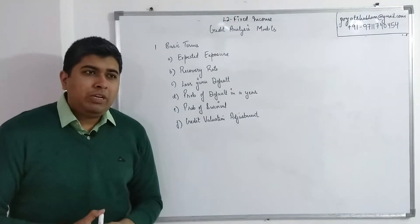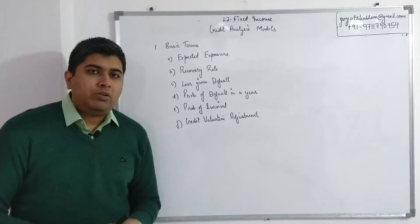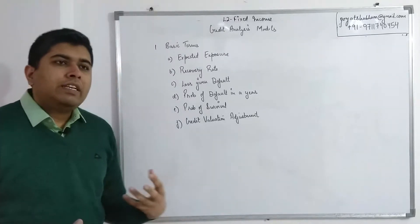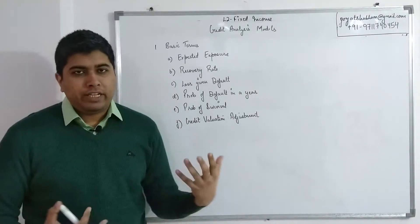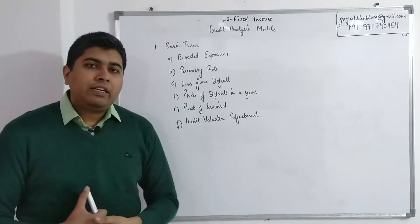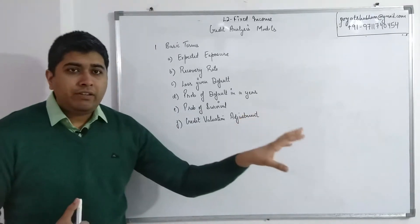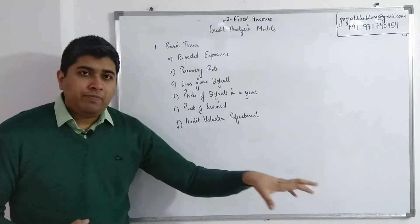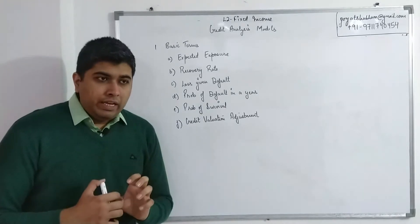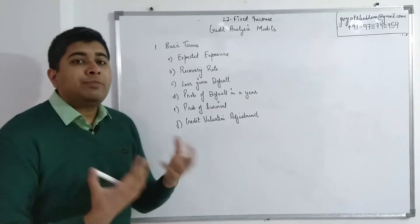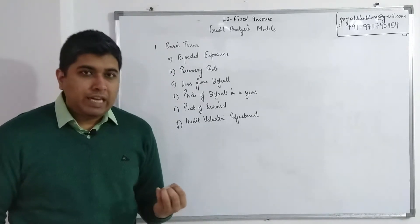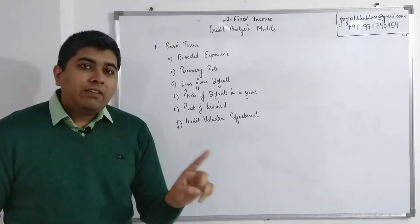In reality, continuing with this example, normally no one gives a loan of this size without collateral. There will be some asset used as security. Let's say the bank gave a loan of $100 million and against it had a collateral asset worth $60 million. In case the company defaults, the bank seizes that asset and sells it in the market to recover $60 million. So the bank gave $100 million, all of which was exposed to risk, but they didn't lose all of it — they recovered $60 million and lost $40 million.